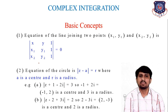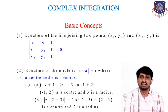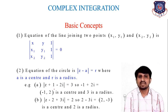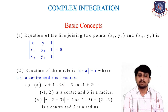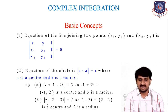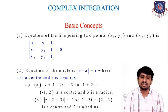Next, you have to remember the equation of a circle. The general form of the equation of a circle in complex numbers is |z - a| = r, where a is the center and r is the radius. For example, |z + 1 - 2i| = 3, so the center is -1 + 2i with radius 3. Another example: |z - 2 + 3i| = 2, so the center is 2 - 3i and the radius is 2.